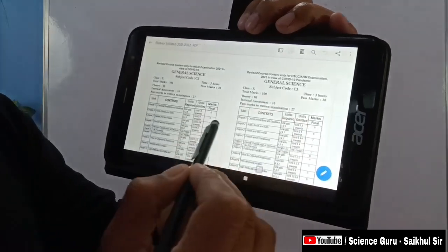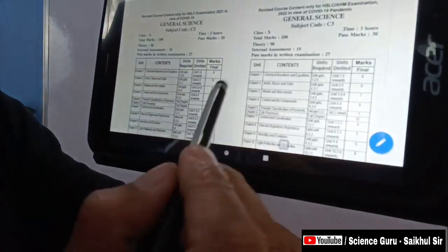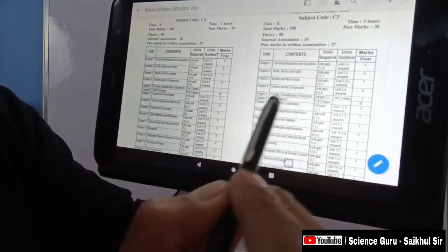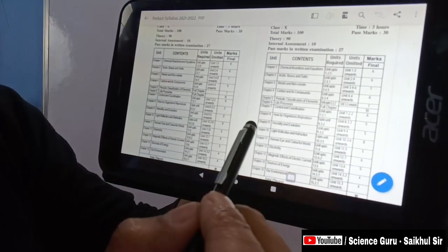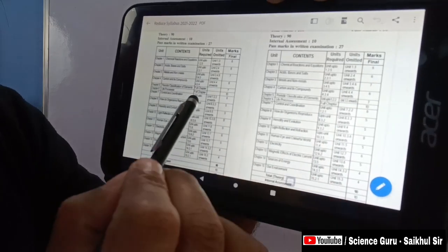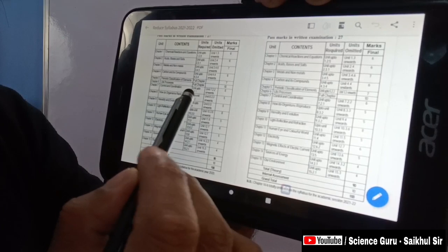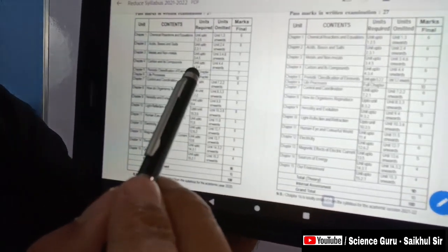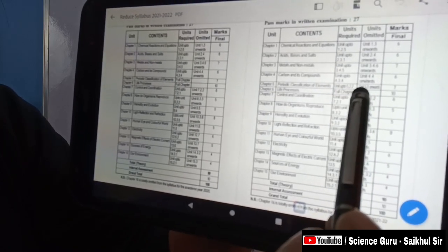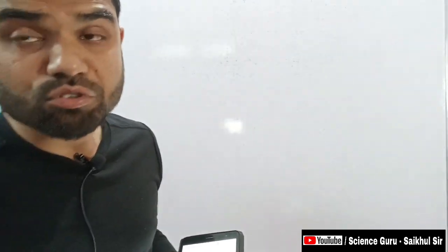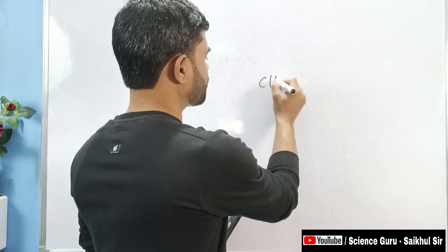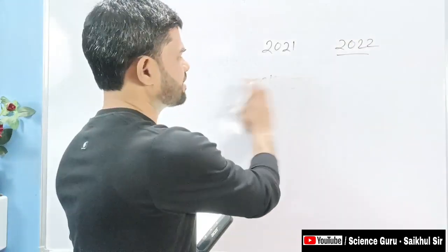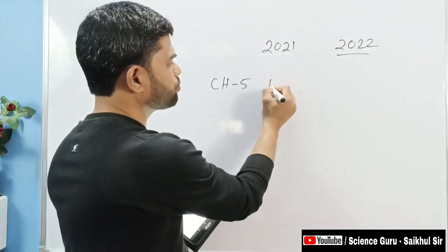For General Science, in both 2021 and 2022, the first chapter is the same. Second chapter, third chapter, fourth chapter - all same. Fifth chapter, Periodic Classification of Elements, in 2021 it was full chapter, but in 2022 only section 5.3 onwards is included. So Chapter 5 has differences.